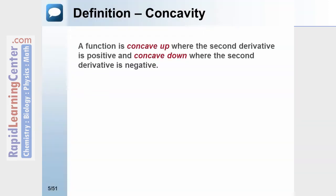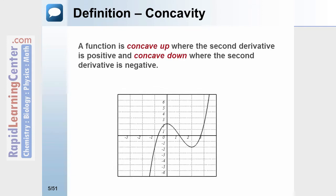Let's talk about concavity. A function is concave up where the second derivative is positive, and it's concave down where the second derivative is negative. Let's consider this graph — the second derivative would be negative in the area shown in blue.